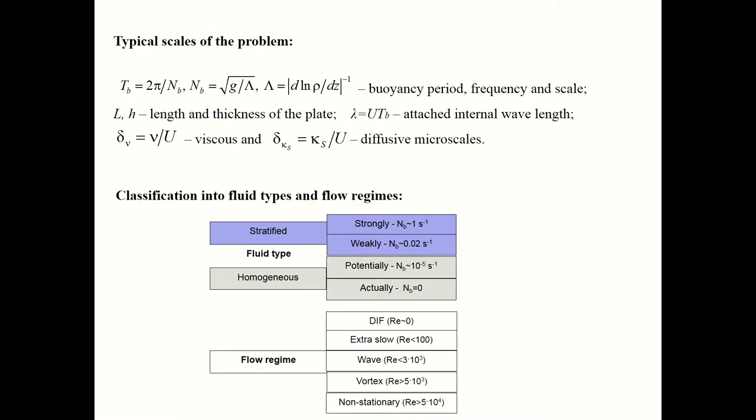We also classified flow regimes. Diffusion induced flows, which are the slowest one on motionless obstacles. Extra slow regime with very slow speed of movement of the obstacle. Wave regime when internal waves appear. Upstream perturbations and attached internal waves. Vortex regime when intensive vortices appear in the wake and around the obstacles. And non-stationary regimes with relatively high Reynolds number, which is the most complicated.